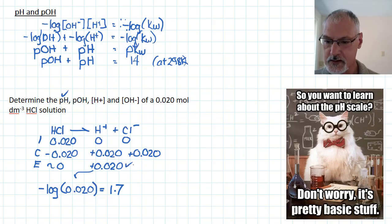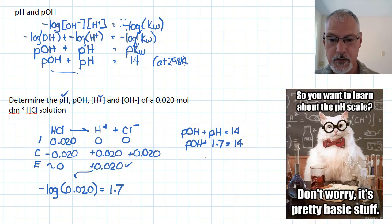This also is the concentration of the H+ ion taken care of. Now let's employ what we developed up here. I know that the pOH plus the pH equals 14. Putting in the pH of 1.7 gives me then a pOH of 12.3. So that would then be the pOH taken care of.